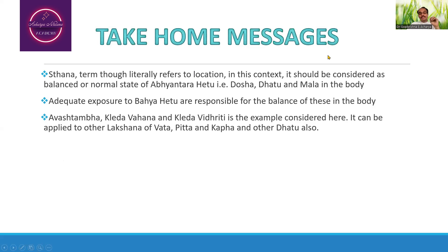The take home message from today's discussion is: Sthana, though considered as location, in this context has to be considered as the balanced or normal state of Abhyantarahetu — that is normal state of Dosha (Vata, Pitta and Kapha), normal state of Dhatu (Rasa, Rakta, Mamsa, Medha, Asthi, Majja and Shukra), and normal functioning of Mala (Mutra, Purisha and Sweda). Adequate exposure to the Bakhya Hetu of these may be responsible for the balance of Dosha, Dhatu and Mala in the body.